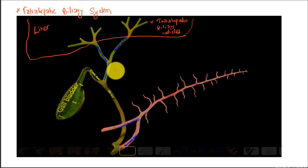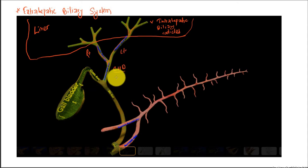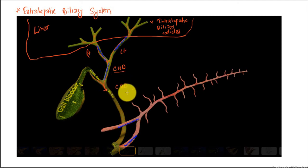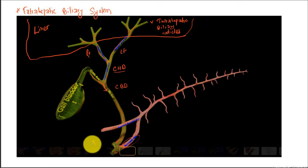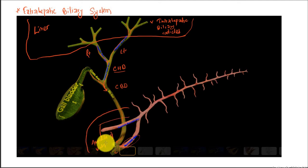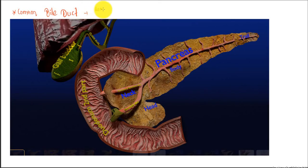Outside the liver there is the extrahepatic biliary system. We have the right hepatic duct and the left hepatic duct joining together to form the common hepatic duct. The cystic duct and the common hepatic duct form the common bile duct. The common bile duct and the pancreatic duct together form a dilation known as the ampulla of Vater, which opens into the second part of the duodenum through the major duodenal papilla. The common bile duct length is 8 to 10 centimeters and the diameter is 6 millimeters.